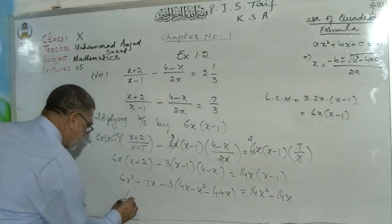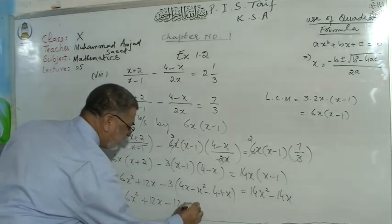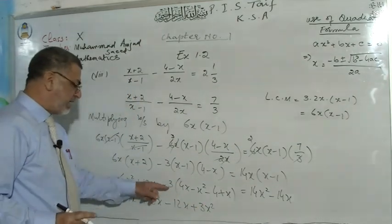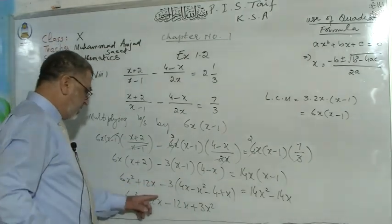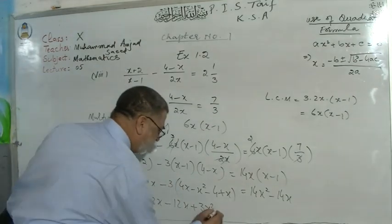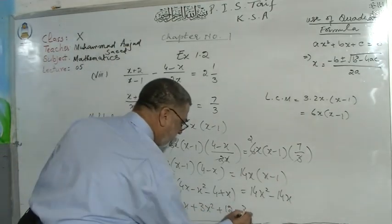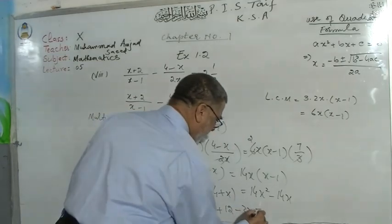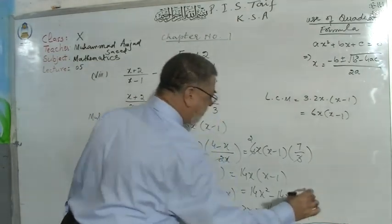That equals 14x² − 14x. Expanding: 6x² + 12x, then minus 12x + 3x². Remember that you are opening the bracket and outside there is a negative sign so there will be a change of sign: minus minus gives plus 3x², then minus minus gives plus 12, and here is minus 3.